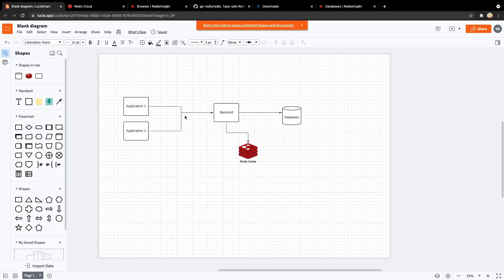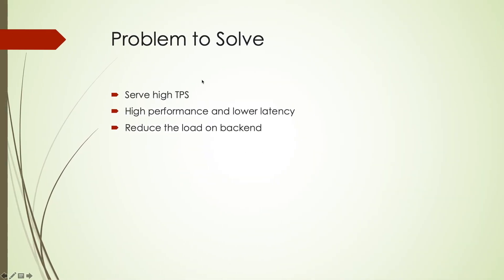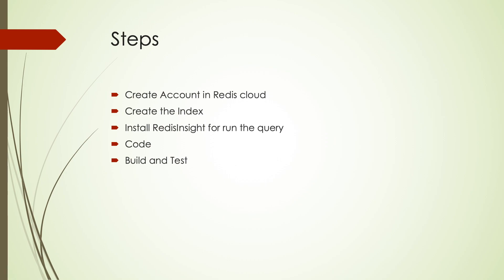Let's understand from a pictorial view — this is how the integration looks after implementing a cache. Say you have many applications requesting similar data very frequently. In a microservice architecture, instead of calling the database or a downstream API, you keep that data in your Redis cache. Whenever a request comes from the application or UI, you hit your cache, get the data, and serve it to the frontend.